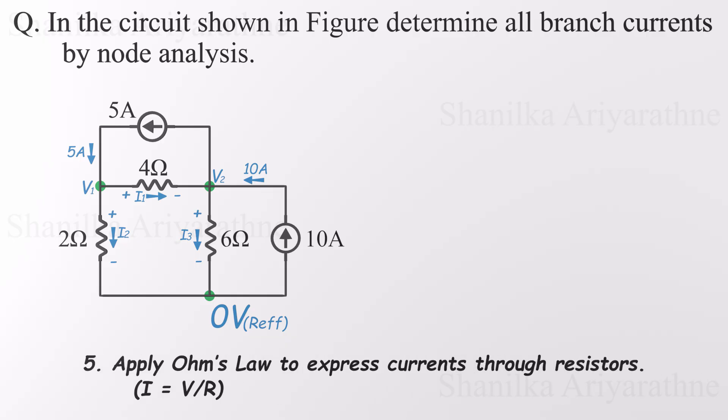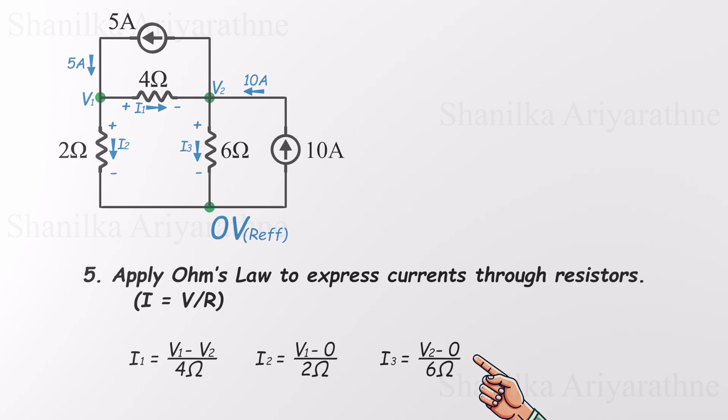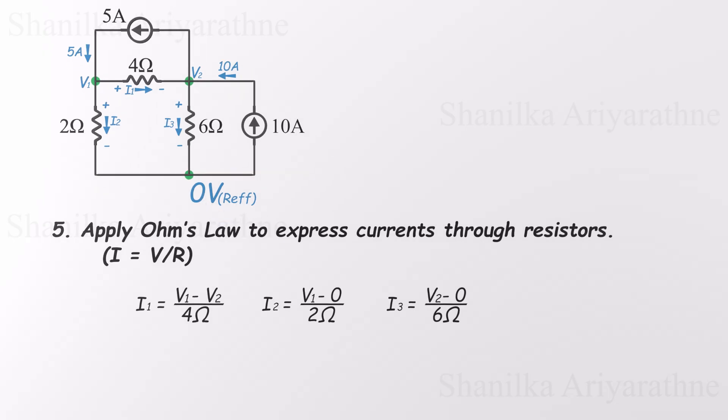In step 5, we use Ohm's law to express the current through each resistor. Ohm's law tells us that current equals the voltage difference across a resistor divided by its resistance. So for the 4-ohm resistor, current I1 is V1 minus V2 divided by 4. For the 2-ohm resistor, current I2 is V1 divided by 2. And for the 6-ohm resistor, current I3 is V2 divided by 6. Now we've got I1, I2, and I3 all written in terms of V1 and V2. With these equations ready, we can move on to applying Kirchhoff's current law to solve for the unknown node voltages.